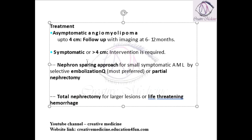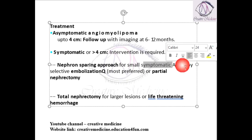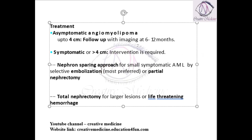The intervention options are a nephron-sparing approach or total nephrectomy. This depends upon the size of the lesion. If the lesion is small and symptomatic, then we can do a nephron-sparing approach.